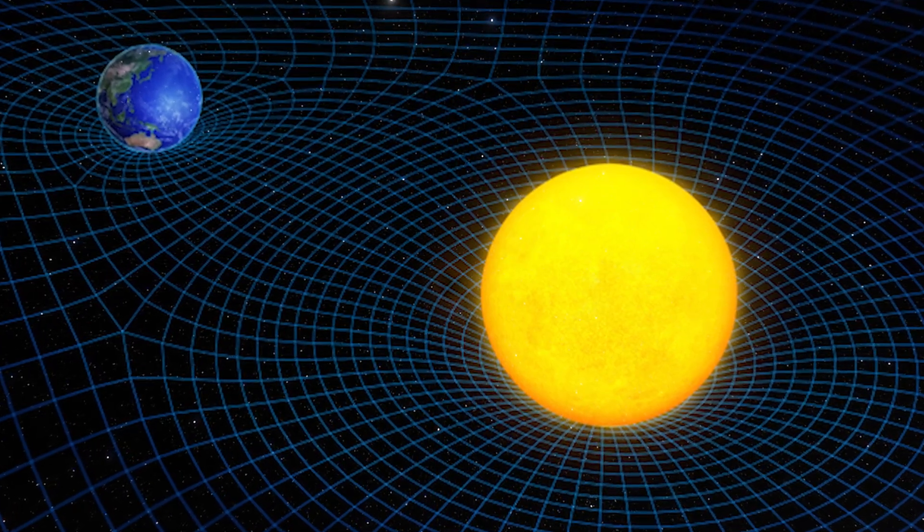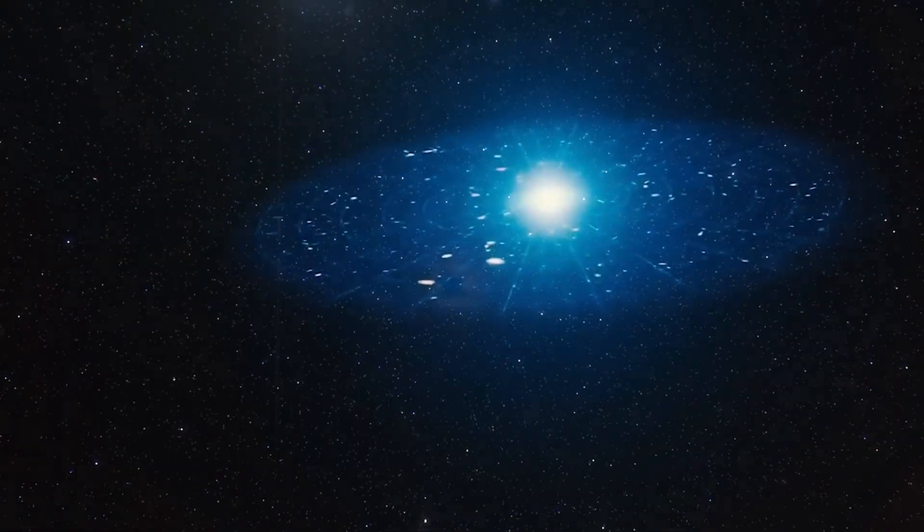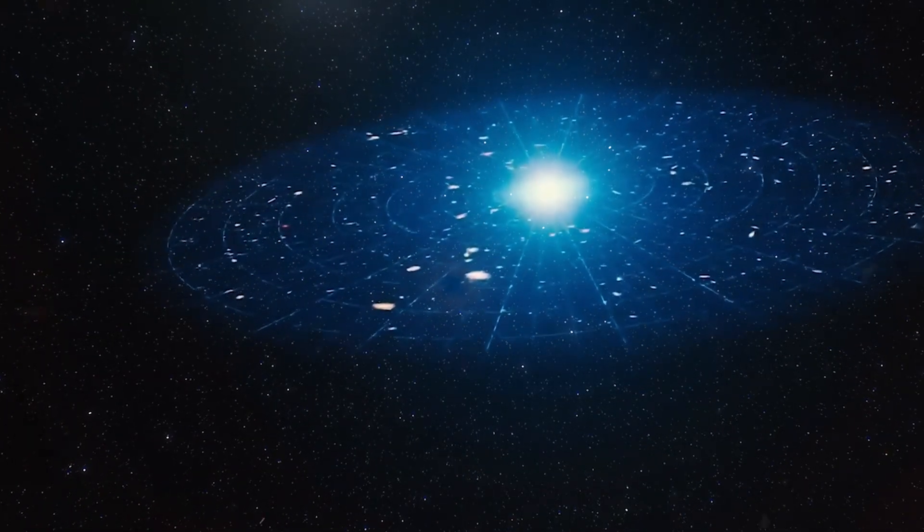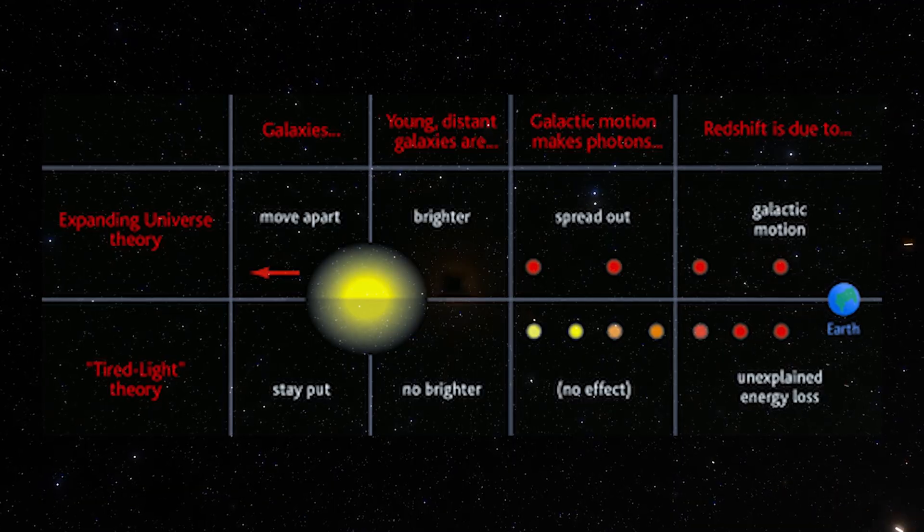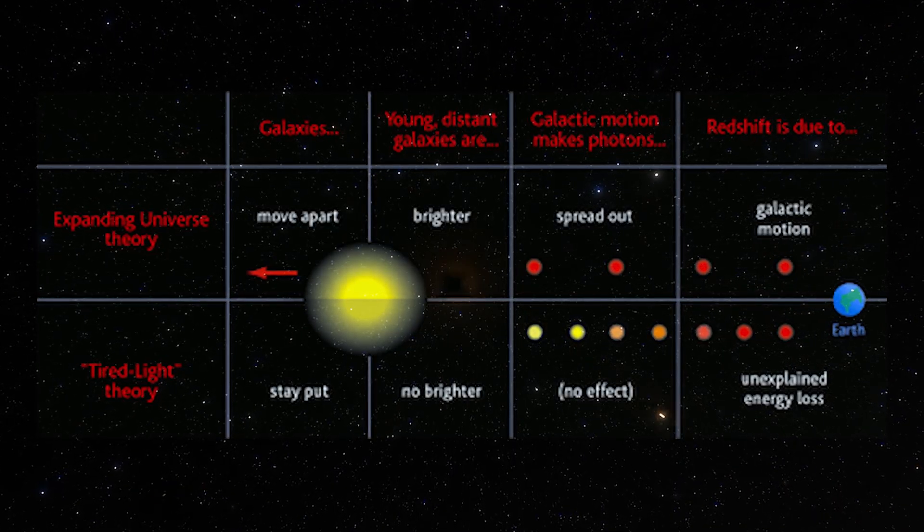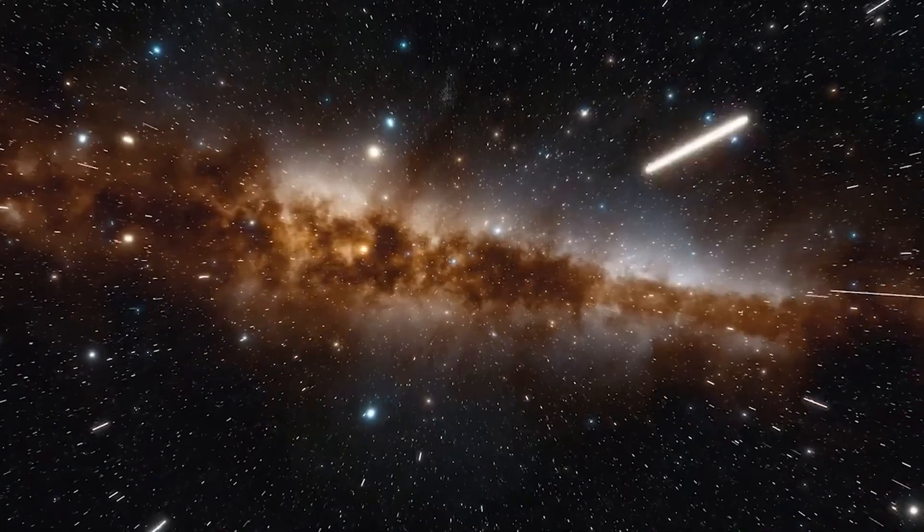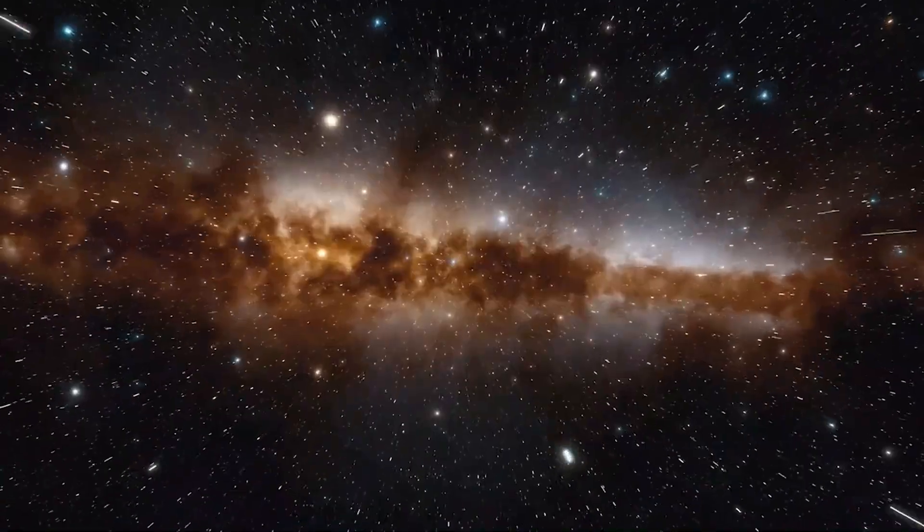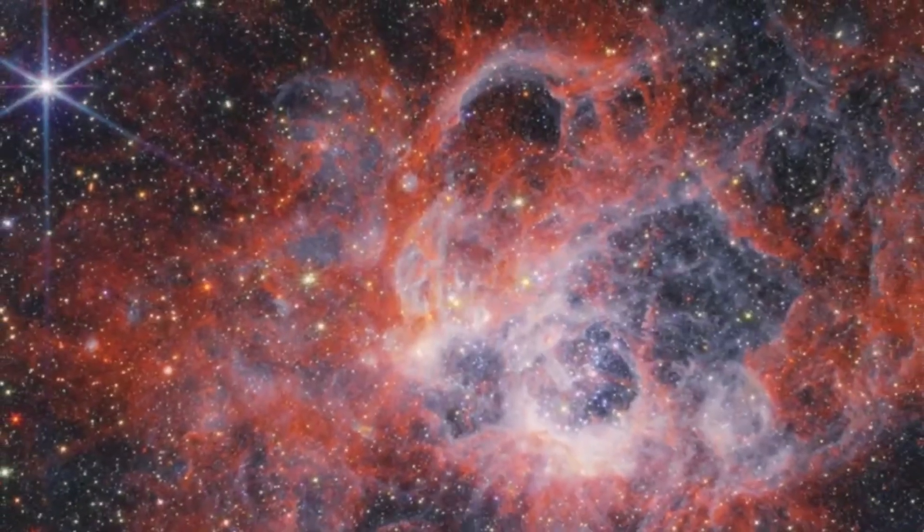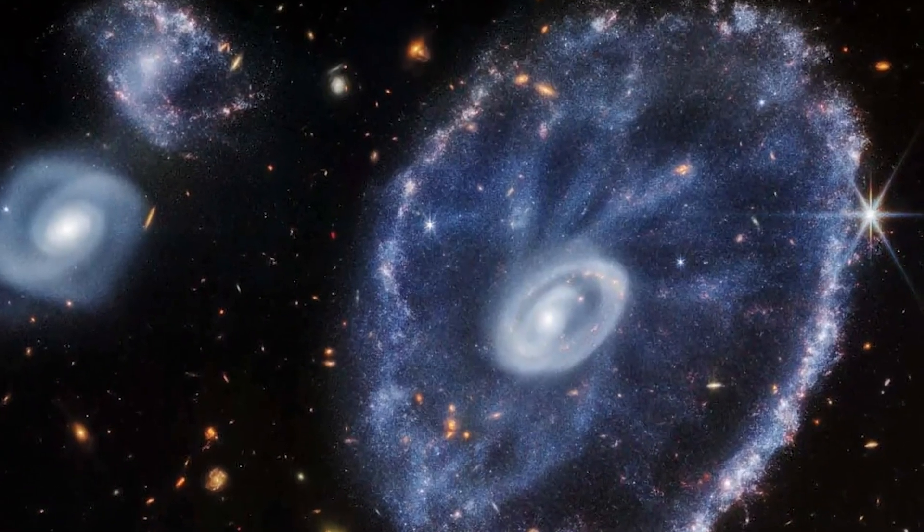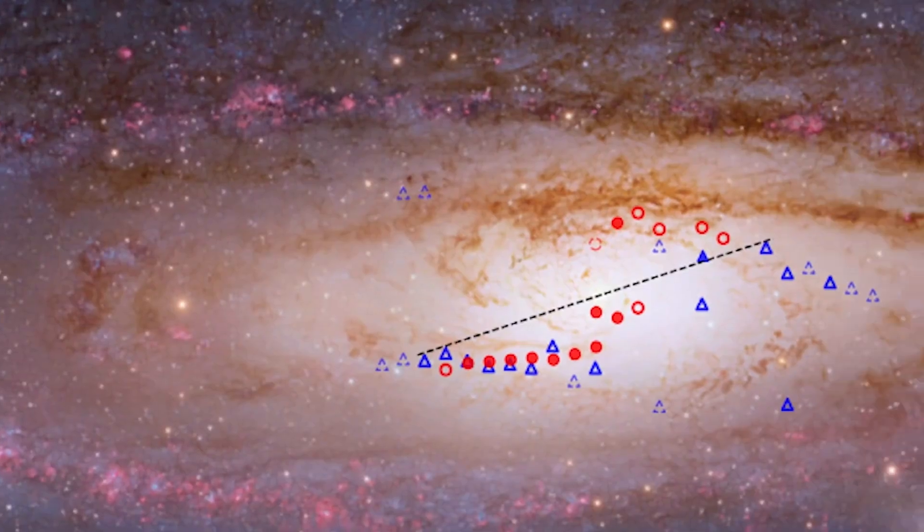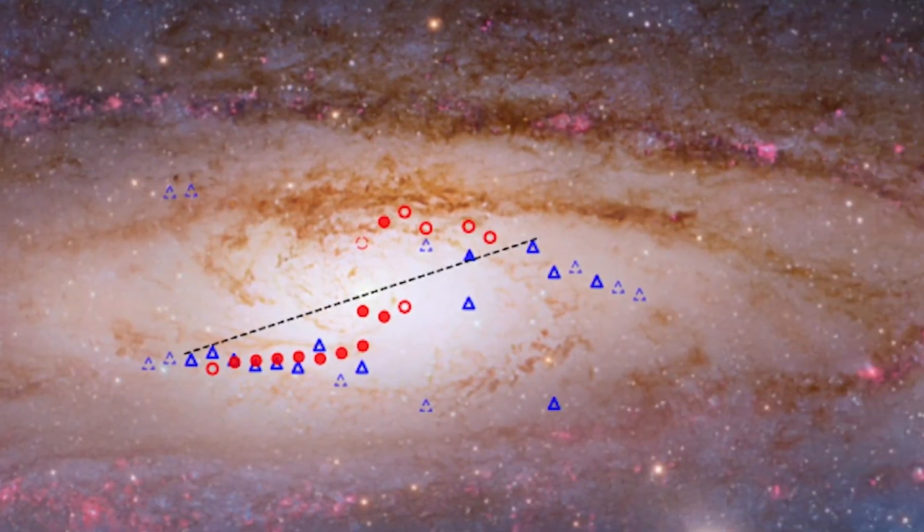Gupta reexamined Einstein's equations of general relativity and combined them with what cosmologists call tired light theory. The idea that photons lose energy over time not only through cosmic expansion, but also through interactions with matter and gravity itself. When he recalculated cosmic ages under this framework, the early galaxies suddenly made sense. There was enough time for them to grow, evolve, and shine.